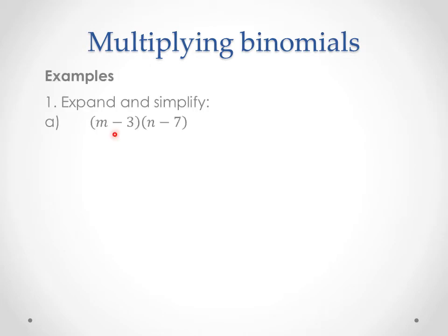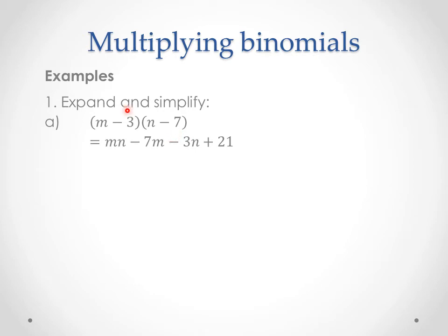Let's expand and simplify. We have our two binomials and our first step tells us to multiply everything in the first binomial by everything in the second. So m times n is mn, m times negative 7 is negative 7m, negative 3 times n is negative 3n, and negative 3 times negative 7 is positive 21. In this example we don't have any like terms — we've got an mn term, an m term, an n term, and a constant — so this is as simple as it gets.